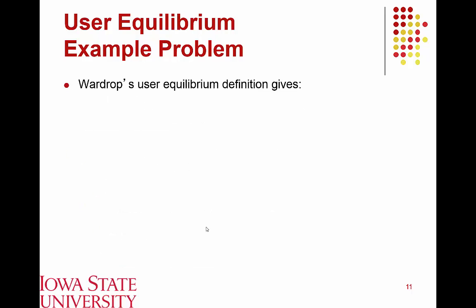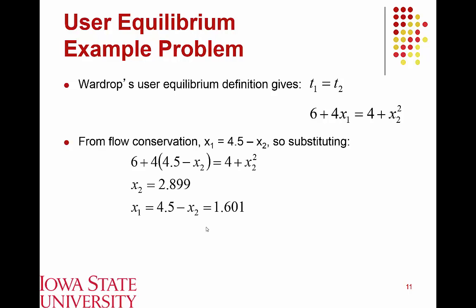Applying Wardrop's user equilibrium principle, since both routes are utilized, their travel times must be equal: T1 = T2. Plugging in the respective equations gives 6 + 4·X1 = 4 + X2². From conservation of flow, X1 = 4.5 − X2, which we substitute in. Solving for X2, we find 2,899 vehicles on route 2 and 1,601 vehicles on route 1.